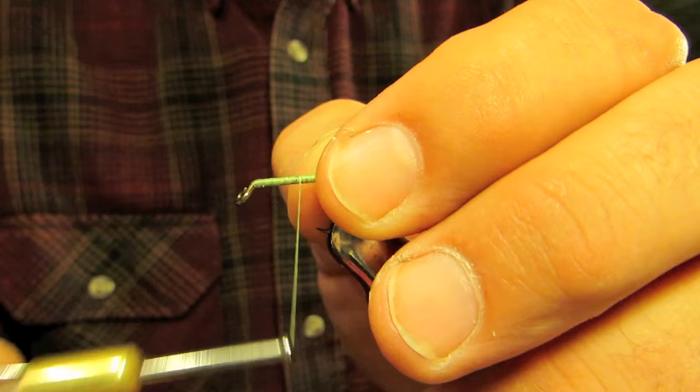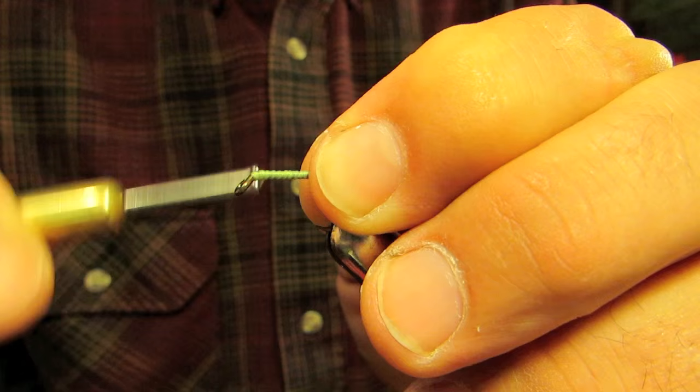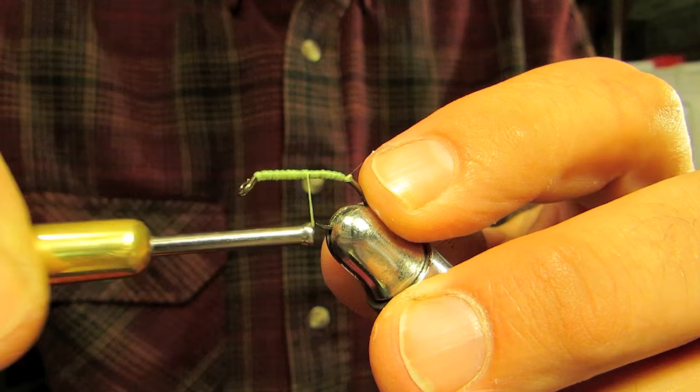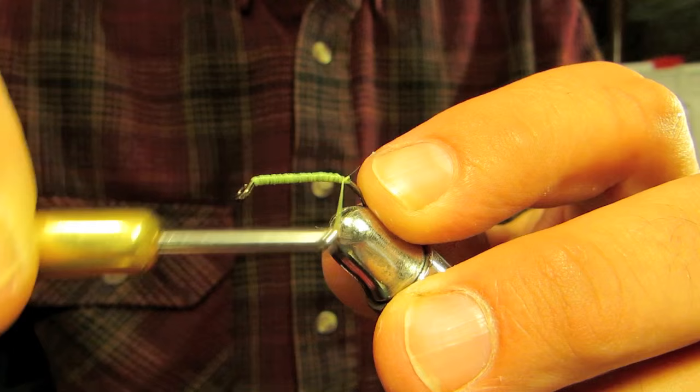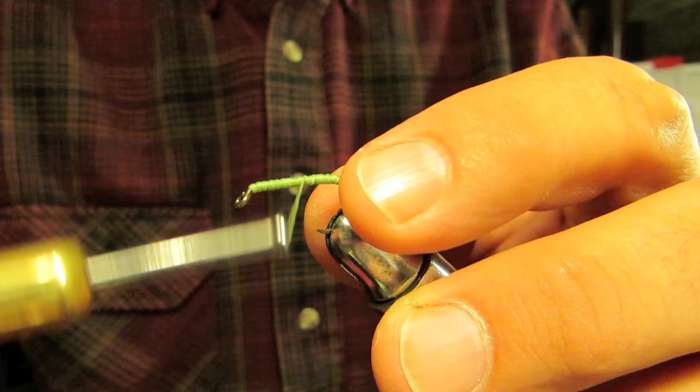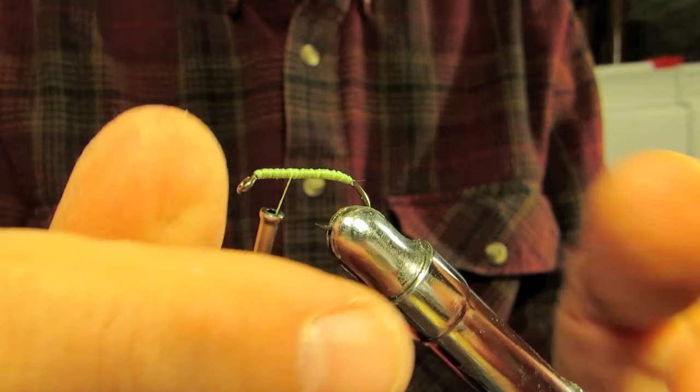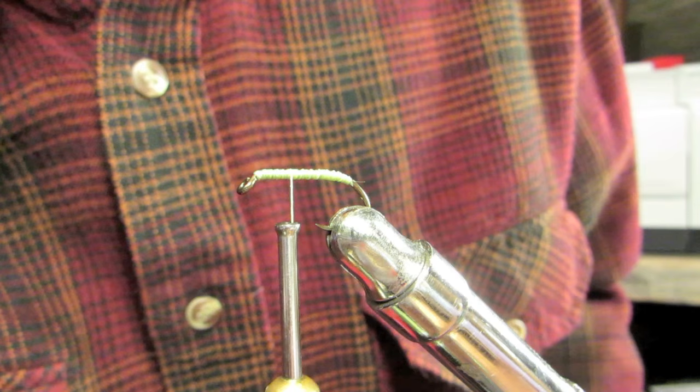The first thing I want to do is put a nice, in this case, a chartreuse base to the fly. And I'm going to just use simple thread. Nice chartreuse base. That way the body of the fly is chartreuse. And these are skimpy flies. When you're fishing for white bass and the water's clear, you might as well use a skimpy fly.